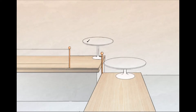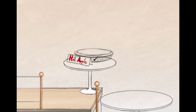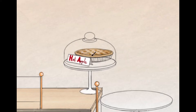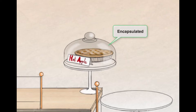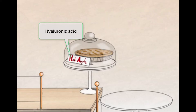The Pie Genies specialize in making pies, so let's start by drawing a pie. And we'll cover it in a nice glass capsule that bakers would use when it's on display. This glass capsule-looking dome represents that Group A Strep is encapsulated. You'll notice we specified that this is hot apple pie — the H and A in hot and apple actually stand for hyaluronic acid.